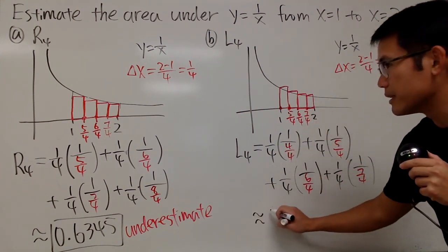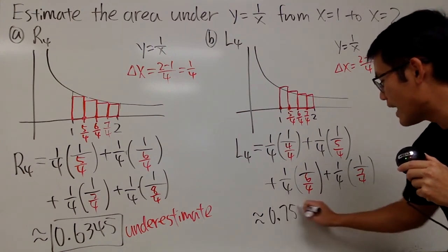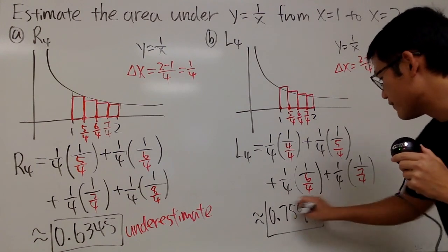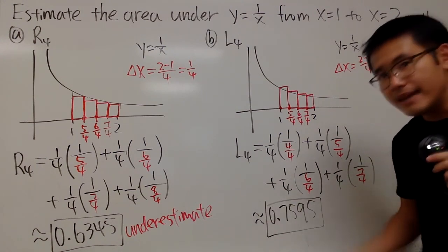Work this out on your calculator. You will actually end up with approximately 0.7595 like this. So this right here is the value for L4. And in this case,